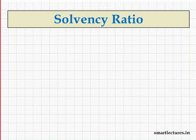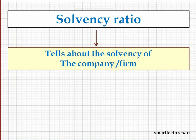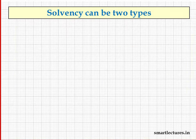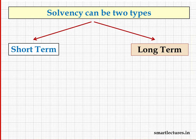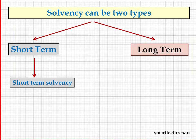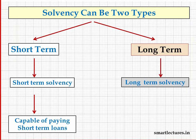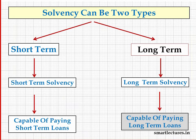Solvency ratios tell about the solvency of the company or firm. Solvency means whether this firm is capable of paying its loans or not. Solvency can be of two types: short-term solvency and long-term solvency. Short-term solvency means whether the firm is capable of paying its short-term loans or not, and long-term solvency means whether the firm is capable of paying its long-term loans. Before we proceed, we must be clear about short-term liabilities.